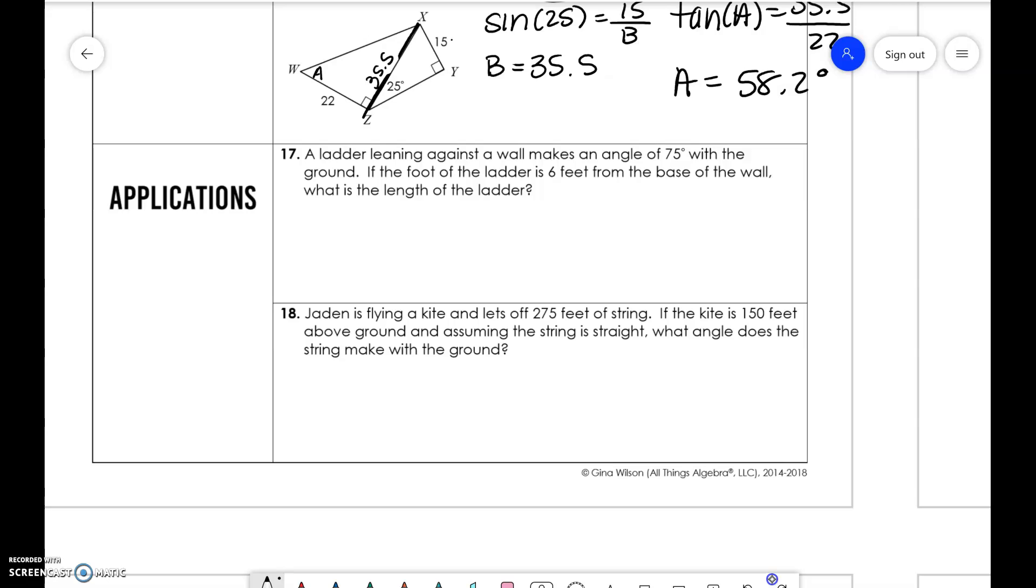And then we got two application problems down here. So like I said before, the hardest thing is just drawing the picture and trying to set it up. So the ladder is leaning against a wall. We've seen this problem a couple times. It makes an angle 75 degrees with the ground. If the foot of the ladder is six feet from the base of the house, what is the length of the ladder? So we're doing adjacent and hypotenuse. So cosine of 75 is equal to six over X. Solve that to get to 23.2 feet.